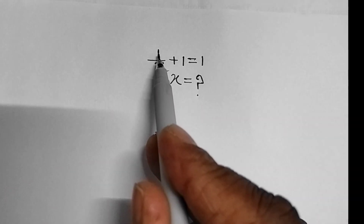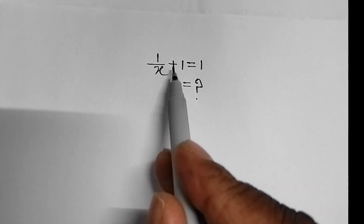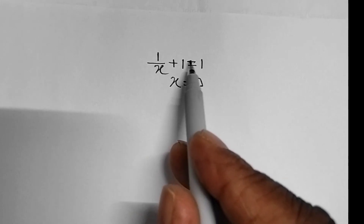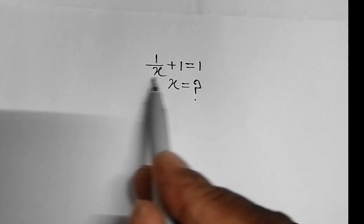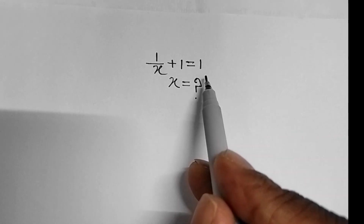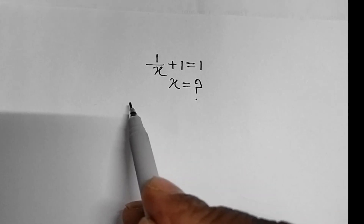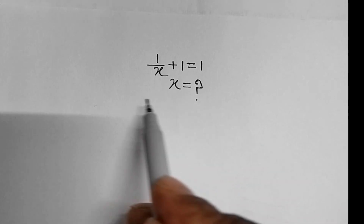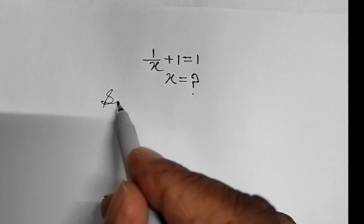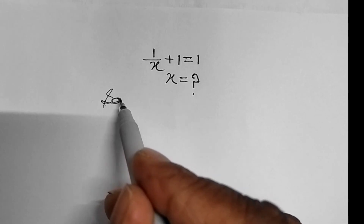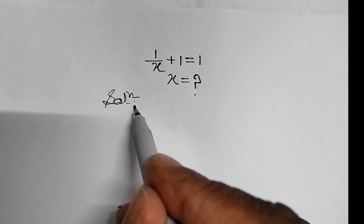1 upon x plus 1 equal to 1. This is our given equation. We will have to find the value of x. It's very easy. Let's see the solution.